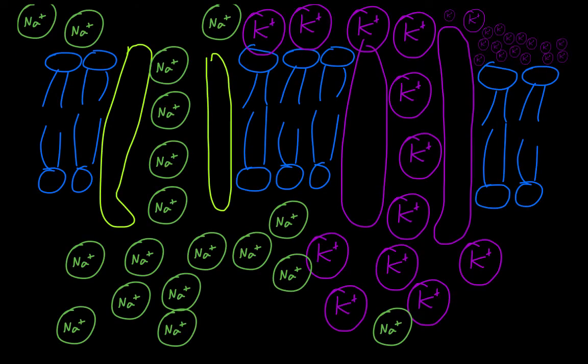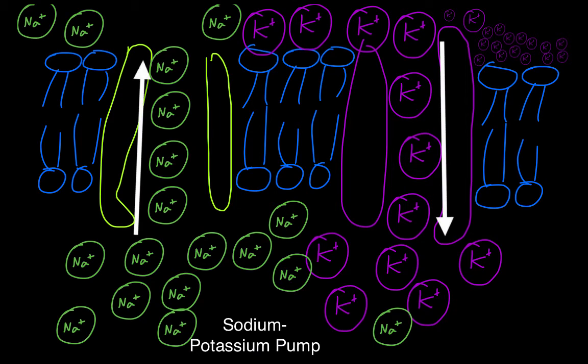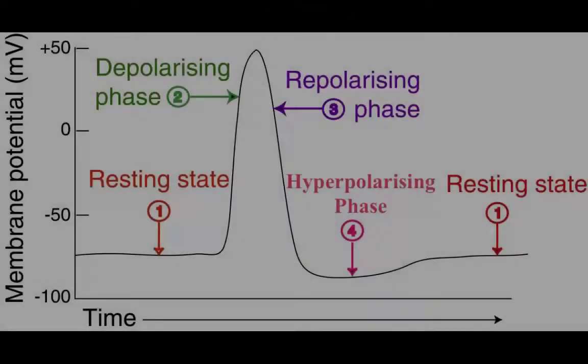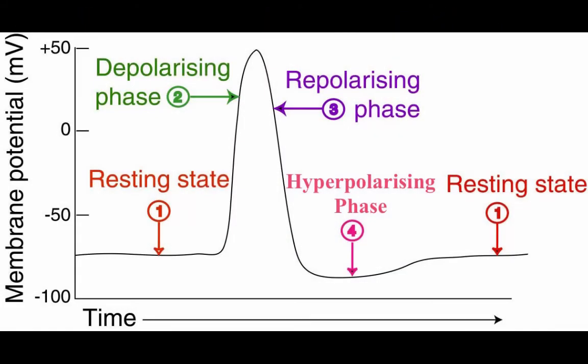The sodium-potassium pump resets the ions. Sodium ions and potassium ions are once more switching their places. This causes the action potential to have a change in voltage back to negative 70 millivolts. This is called the refractory period. During this period, the neuron will not respond to any new stimuli until it reaches the resting potential.